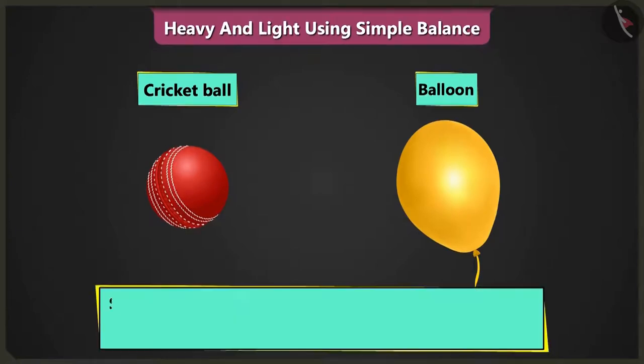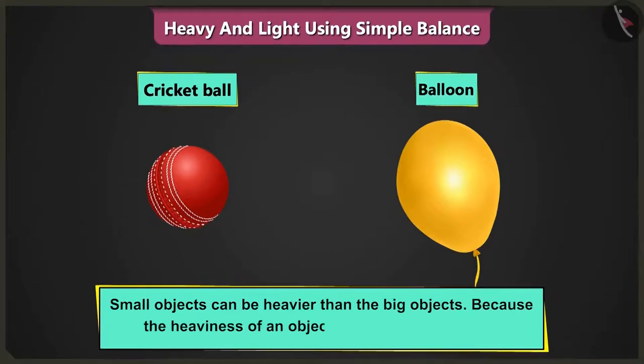Potato, now do you understand? Even small objects can be heavier than the big objects because the heaviness of an object depends on its weight.